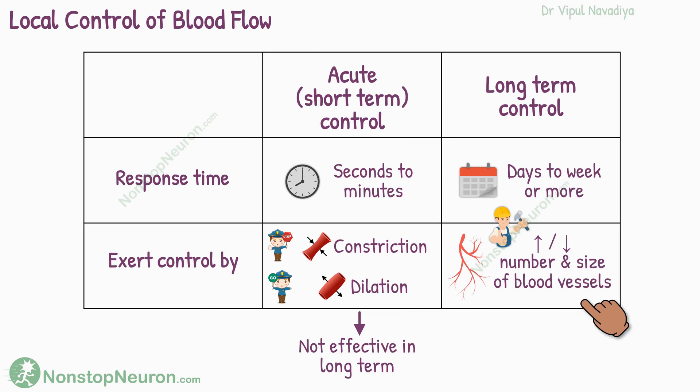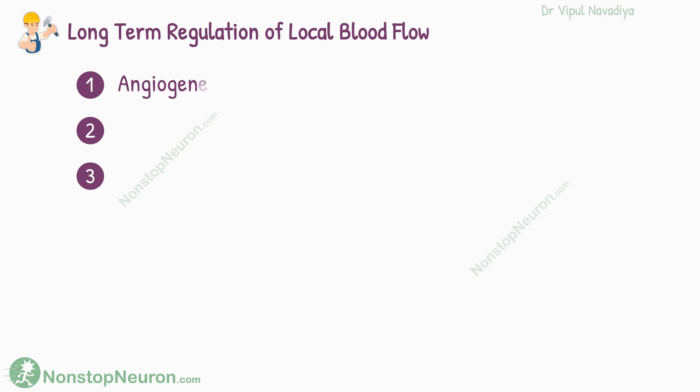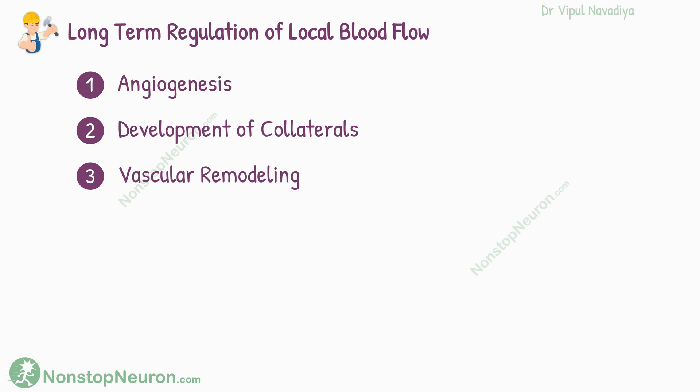The long-term control people are the builders of the vessels — they build or destroy vessels. The short-term regulation guys are the operators of the vessels; they control the flow of blood in existing vessels. In long-term regulation, we basically have three mechanisms: angiogenesis, development of collaterals, and remodeling of existing vessels.